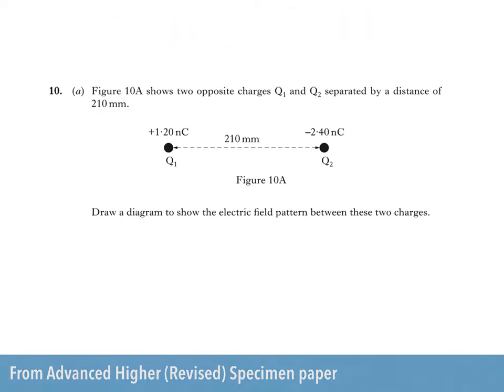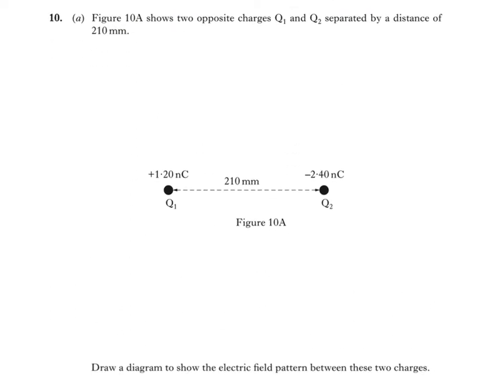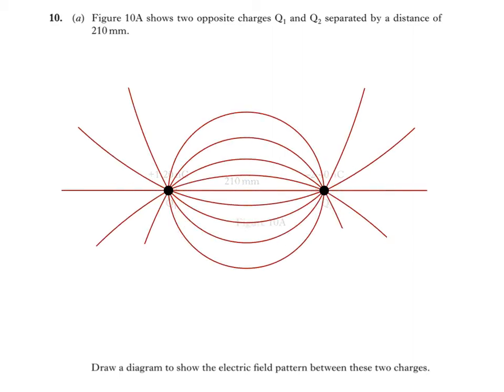So I'll draw an electric field pattern over figure 10A, which is why I'm giving myself more space. When answering this question, lots of people draw something like this. This would be the electric field pattern for a dipole, a pair of opposite charges of equal magnitude. But in this question we have Q1 on the left with a charge of plus 1.2 nC and Q2 with a charge of negative 2.4 nC.